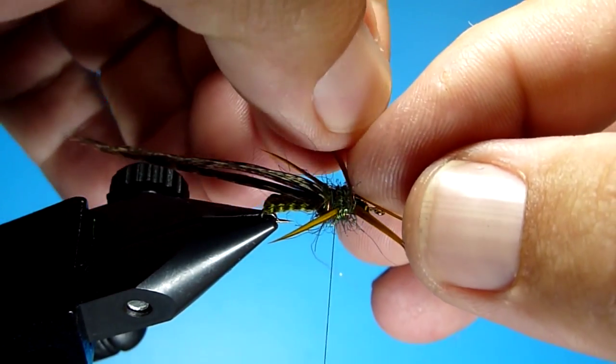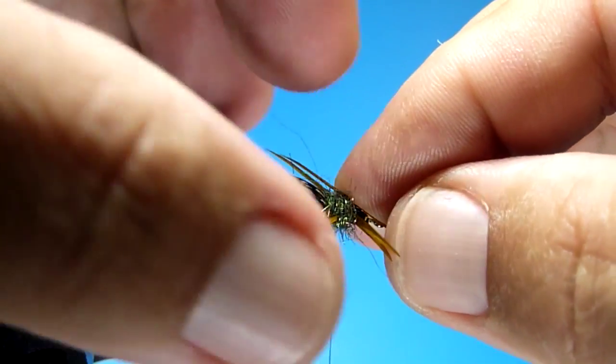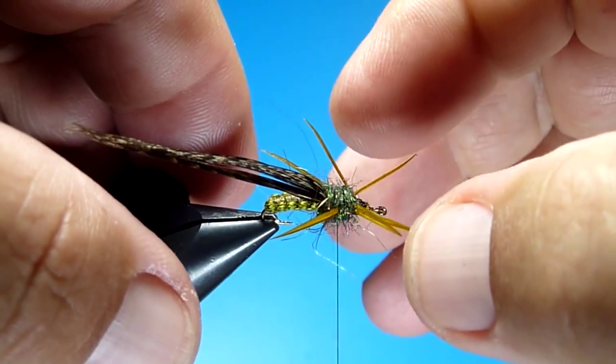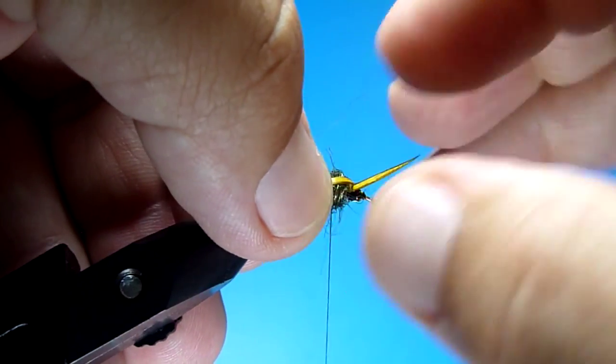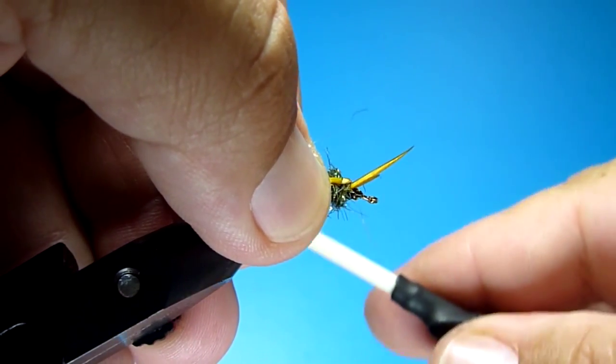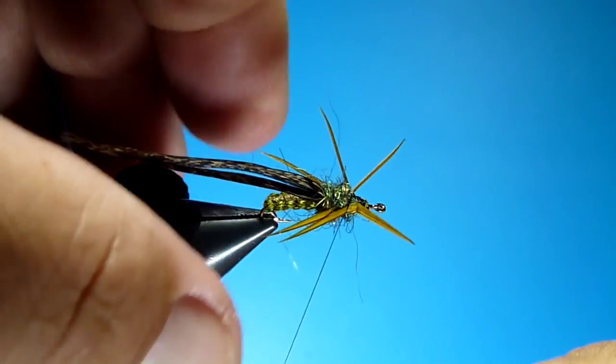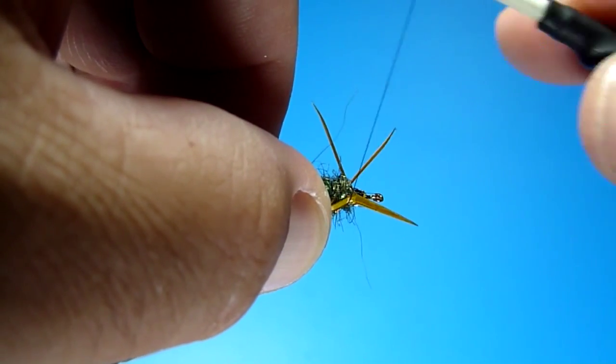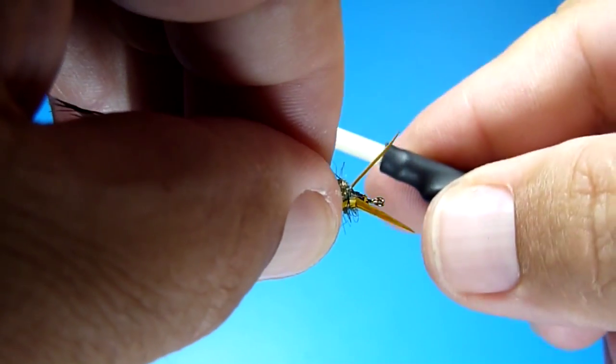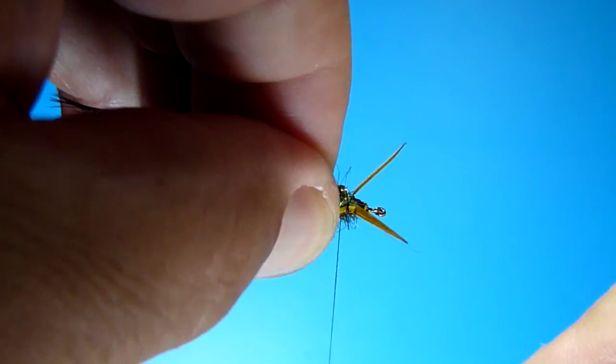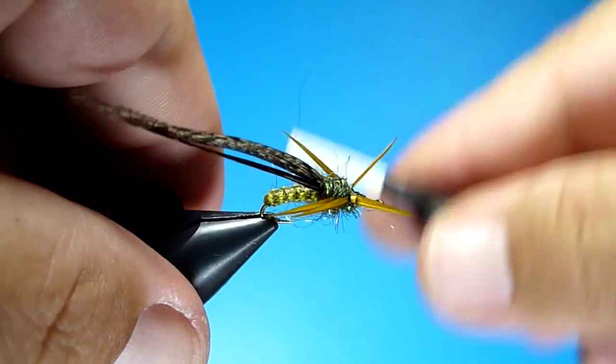So once you get this ball, then go ahead and fold up your next pair of legs. Get them set up in position. You can either tie them in one at a time or grab them both and get them both tied in. Either way works. A little wax on your thread will definitely help with the slippery biots.